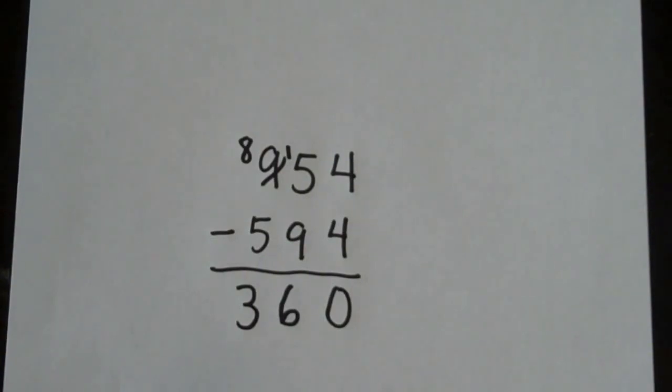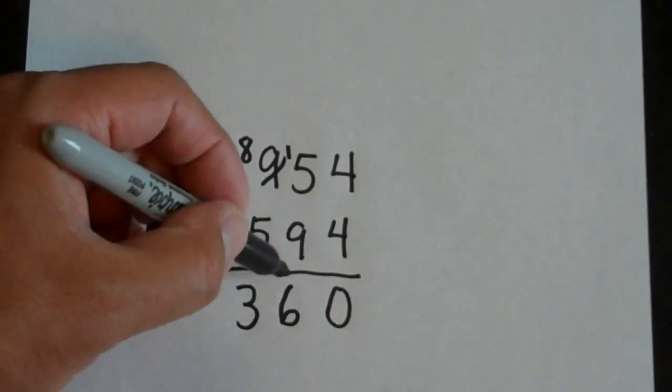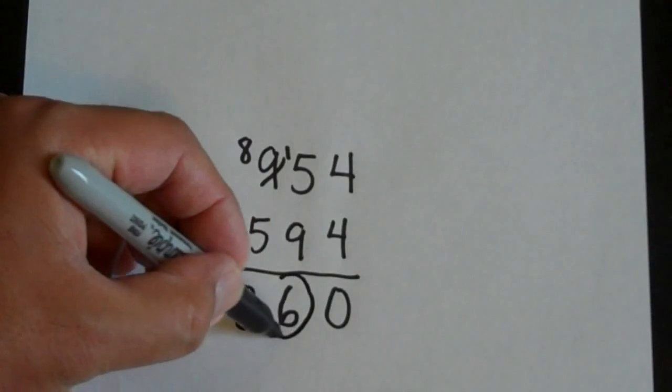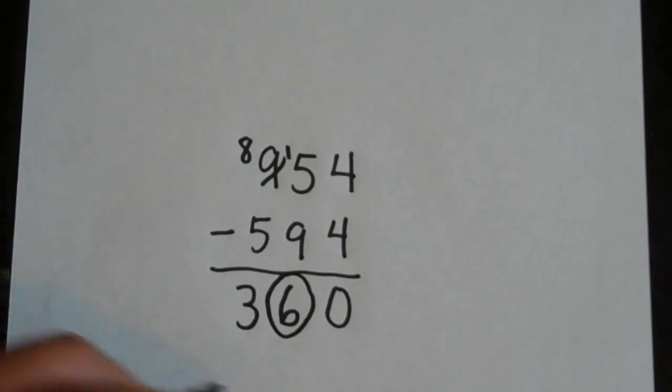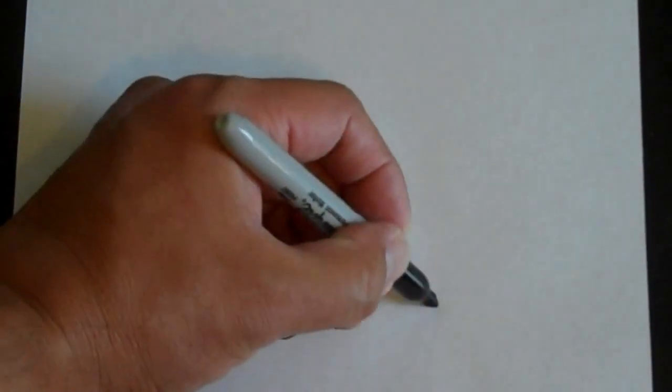So again, it's their time to circle a number. Let's say they circle the 6. Okay, you're still going to ask them, what is the sum of the digits you have left? So they have a 3 and the 0. They're going to tell you 3.